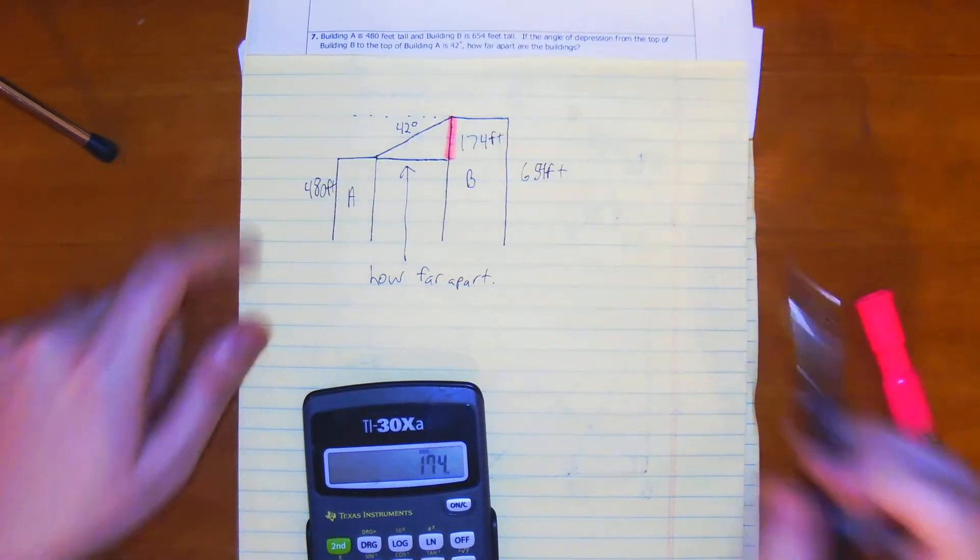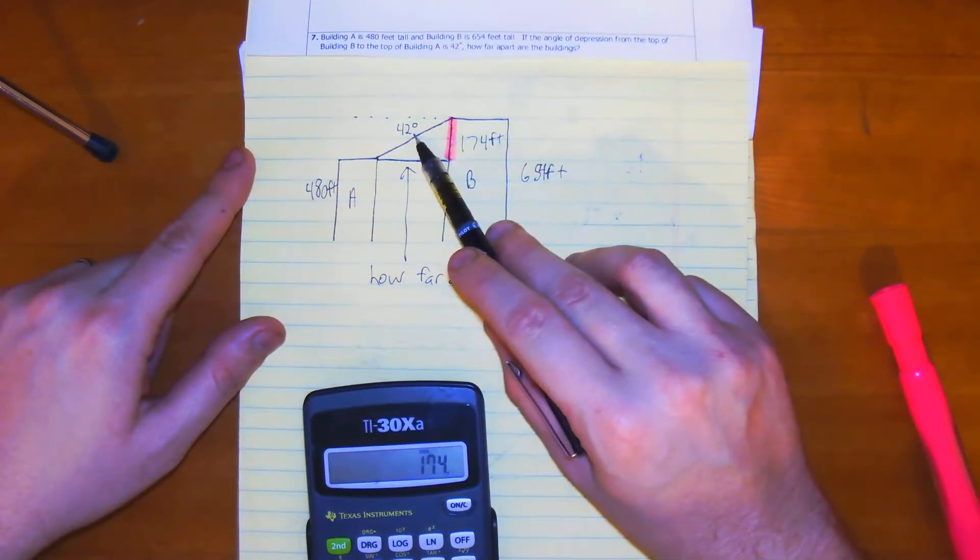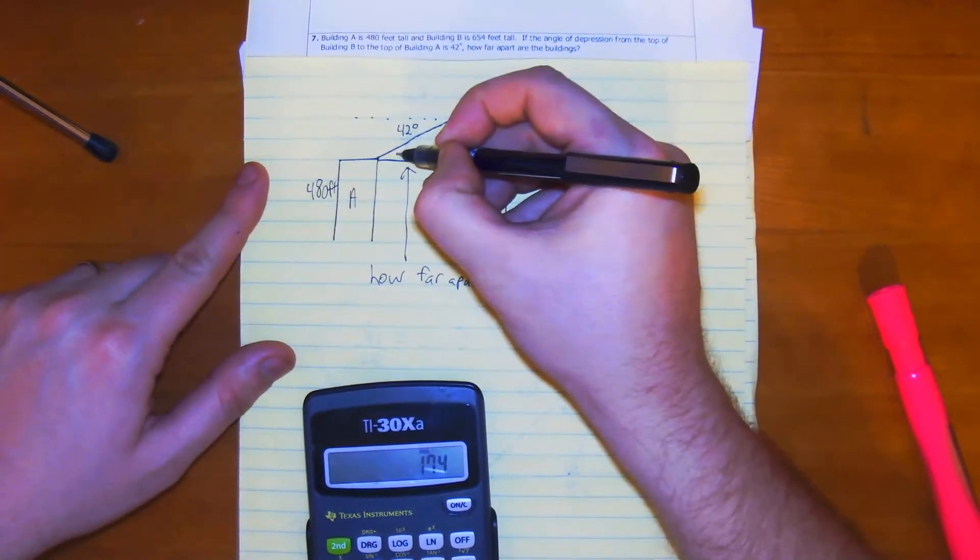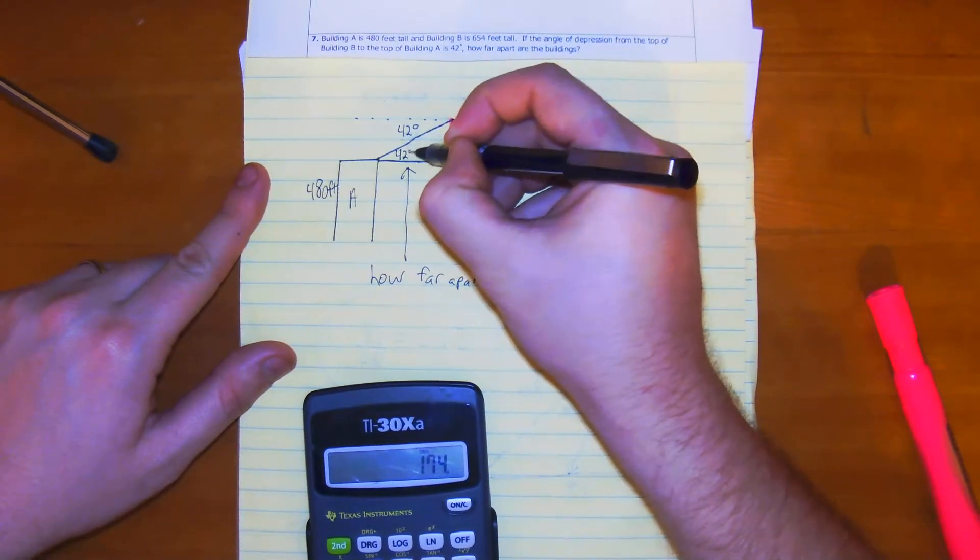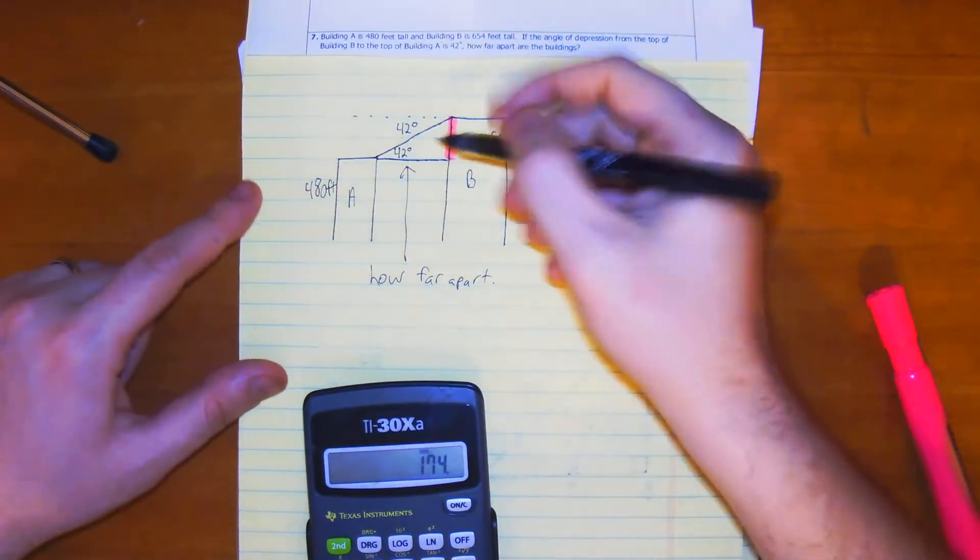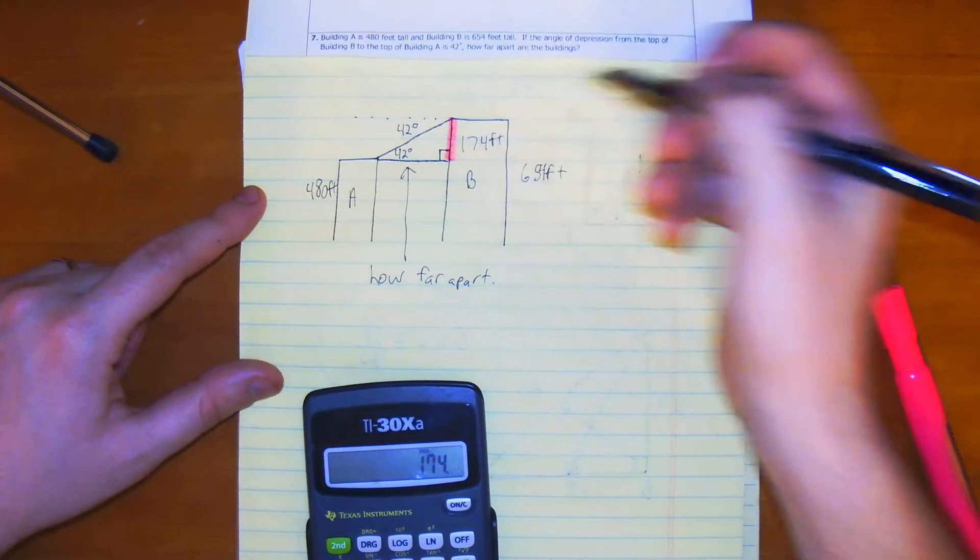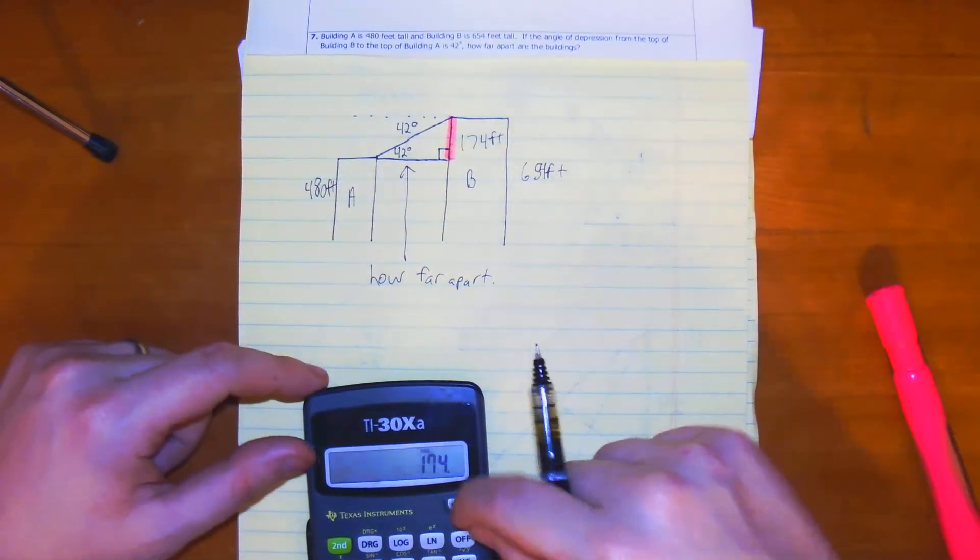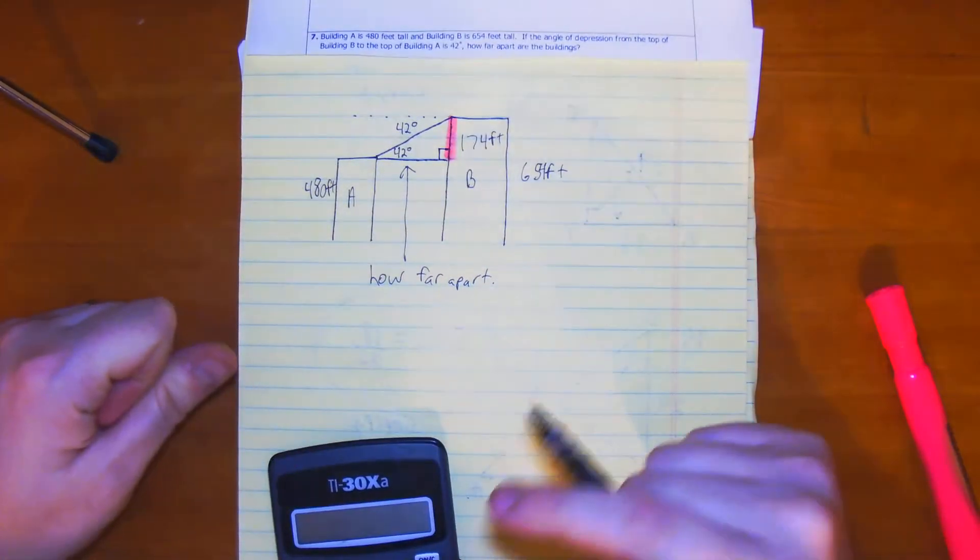Now, if this is 42 degrees, based on alternate interior angles, this would be 42 degrees. This creates a right angle due to the height of building B.